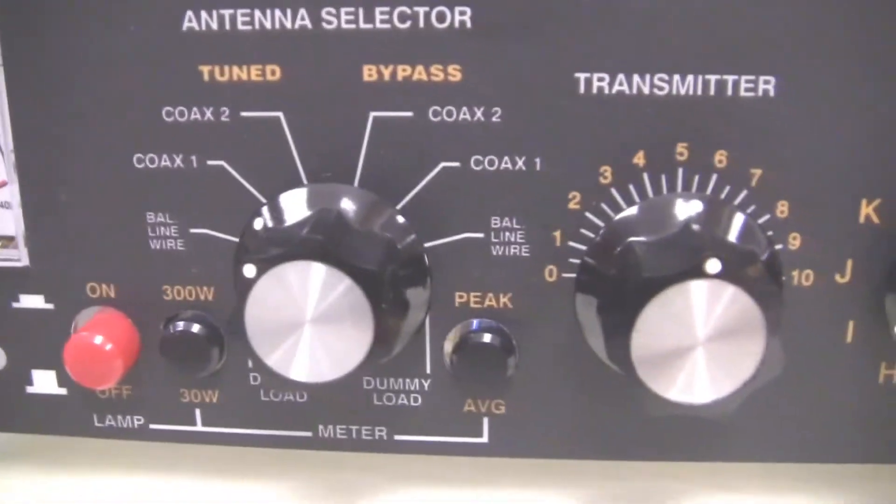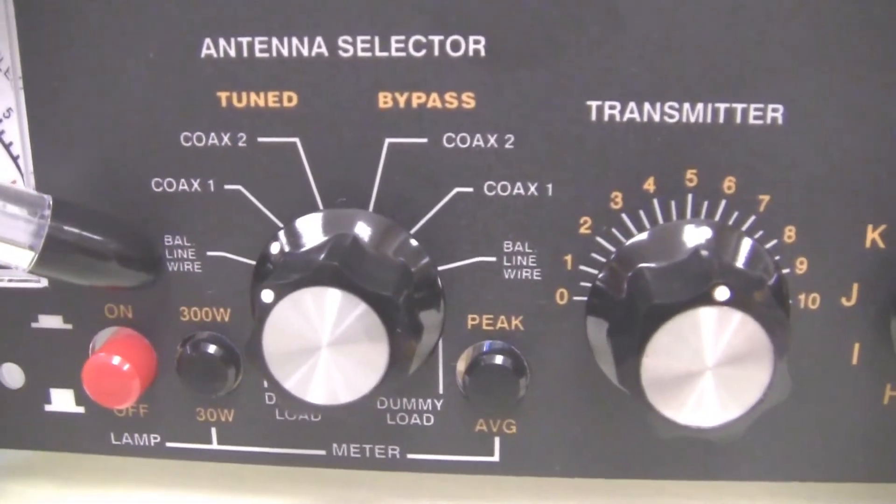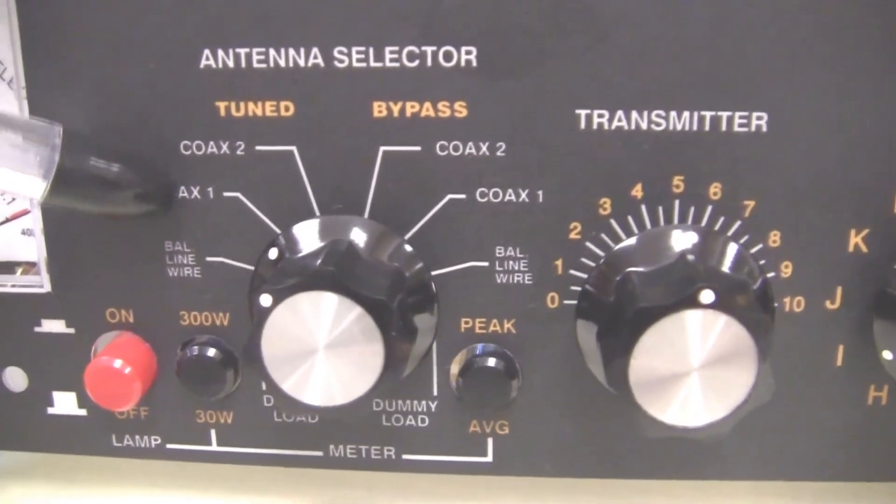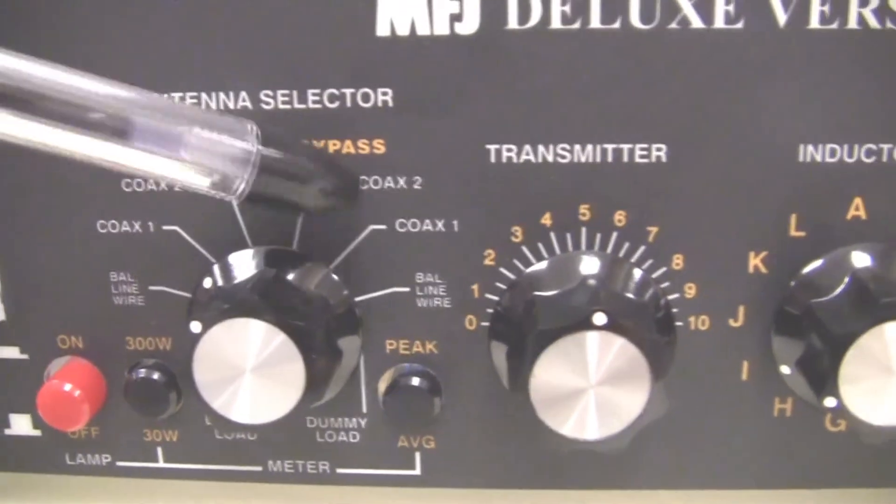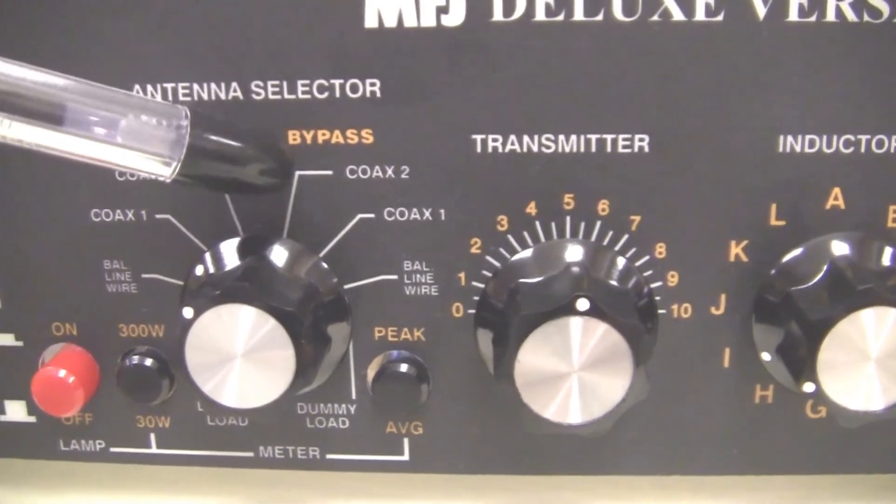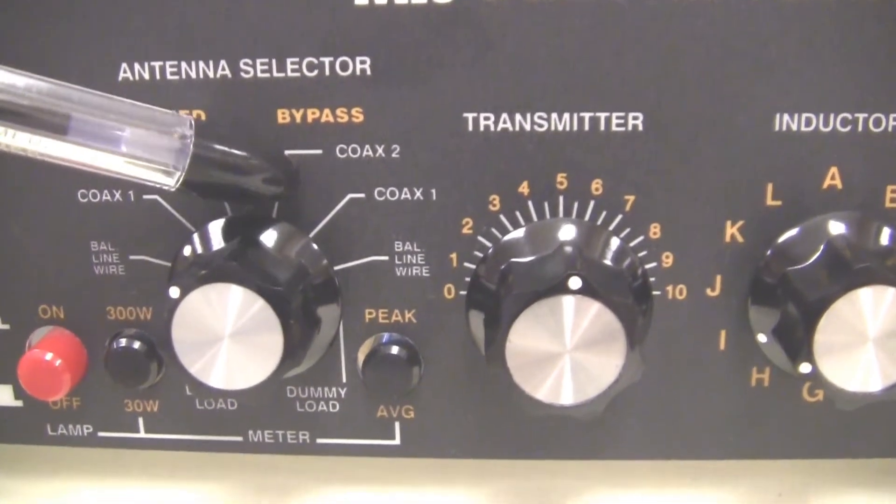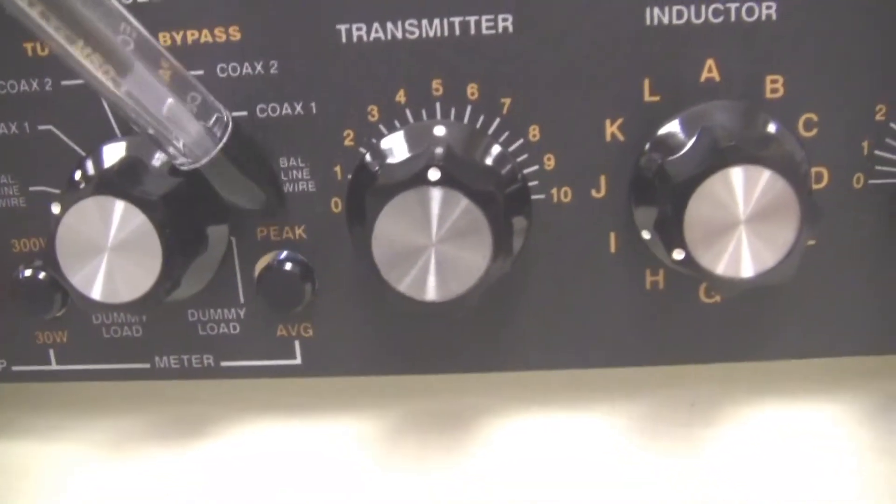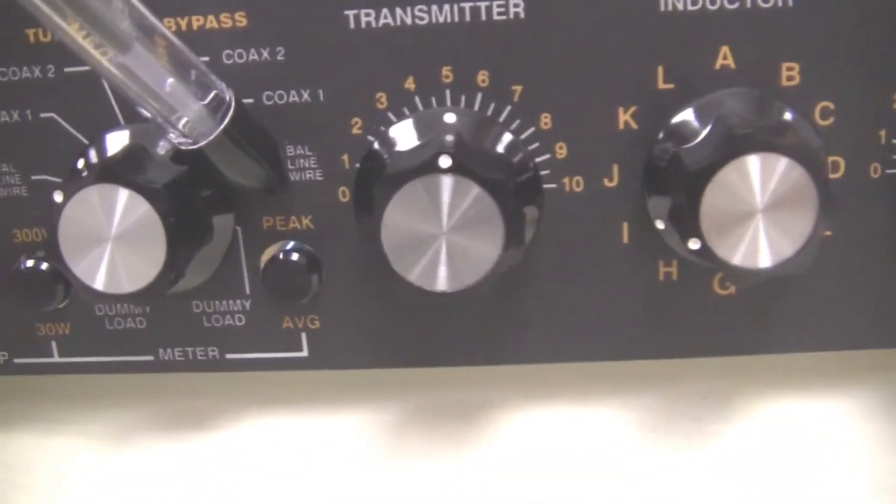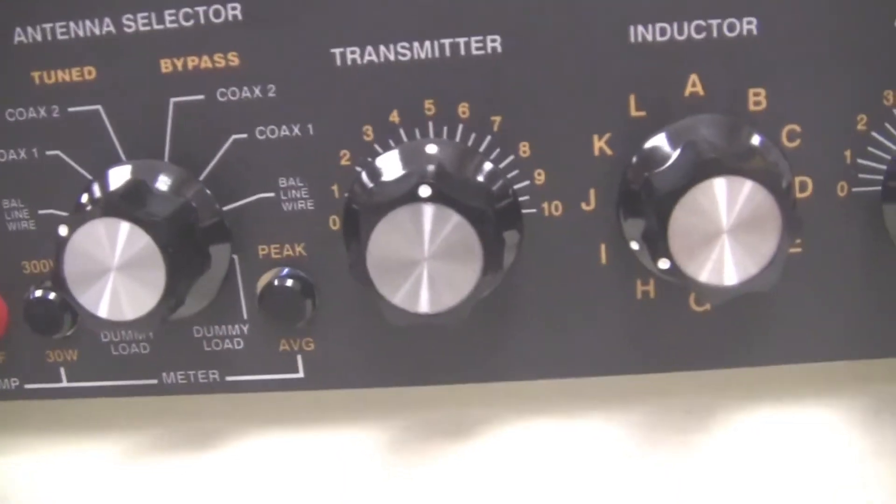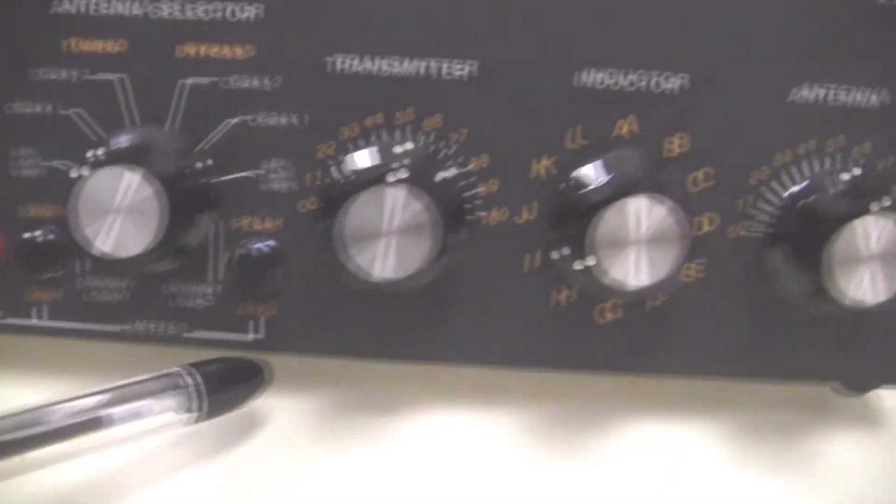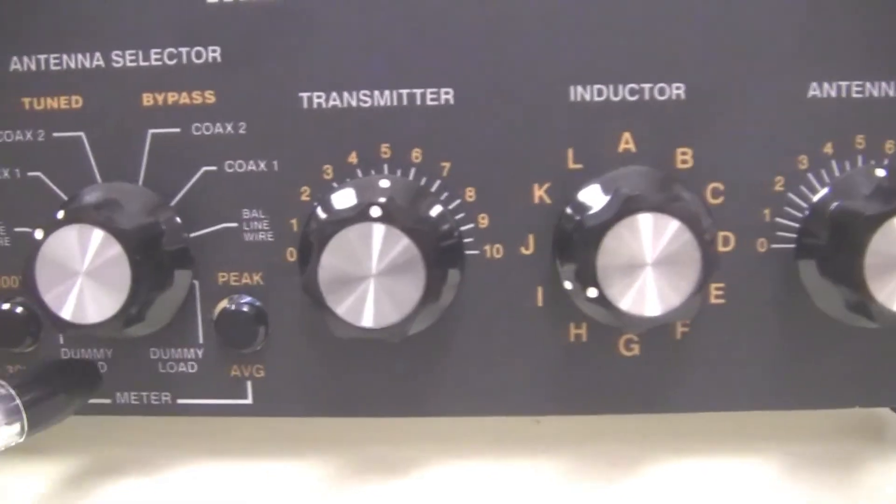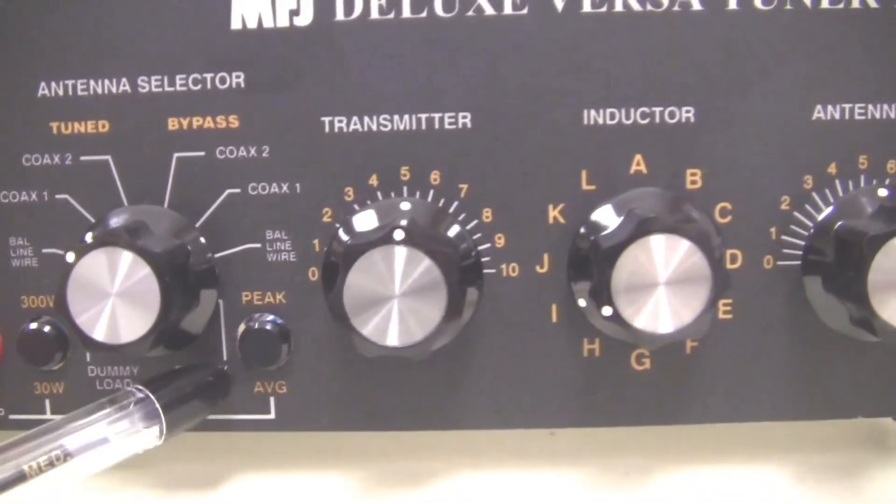Here's the switching available. We can switch the output to the balanced line or the output going to coax one or coax two. Over here we can bypass the entire tuner and have the input go directly to output two or output one, and we can have it go directly to the balanced line. There's a dummy load connection down here. So here's your dummy load connections. This connects in your 50 ohm resistor.